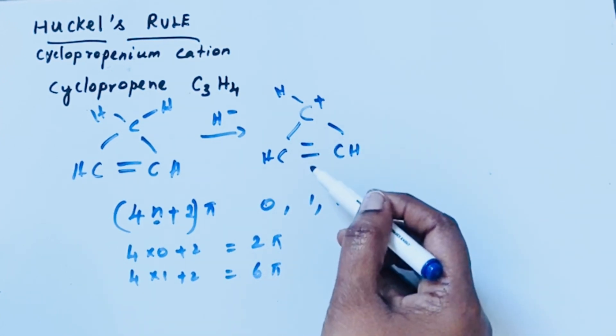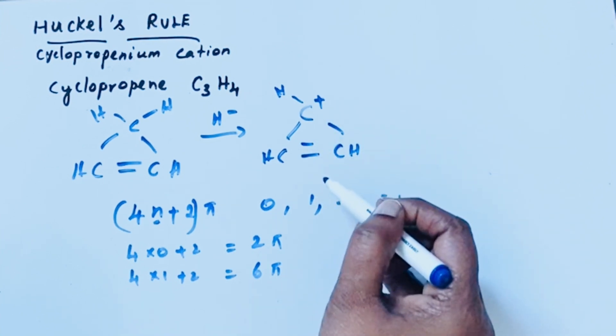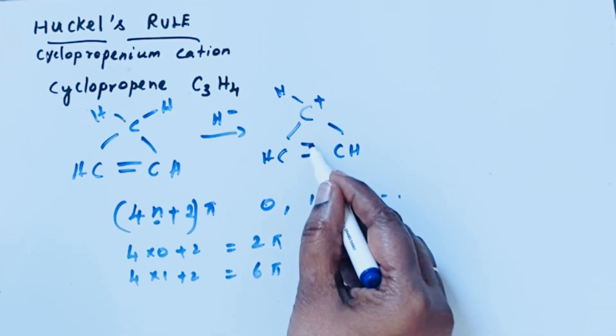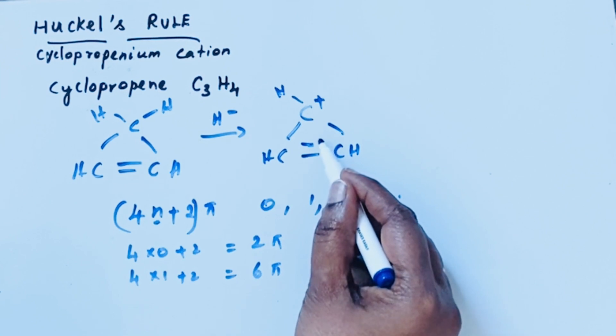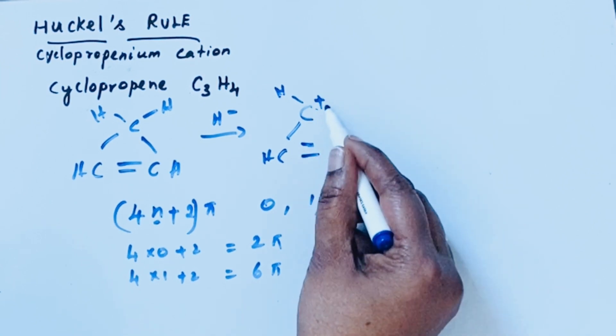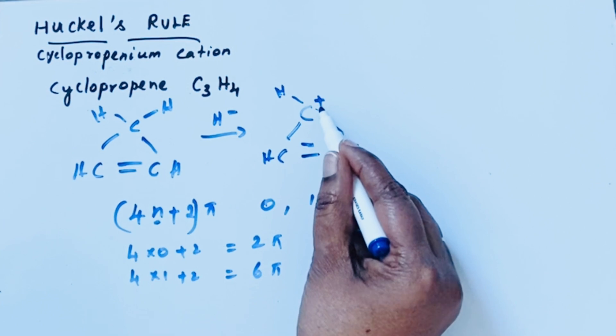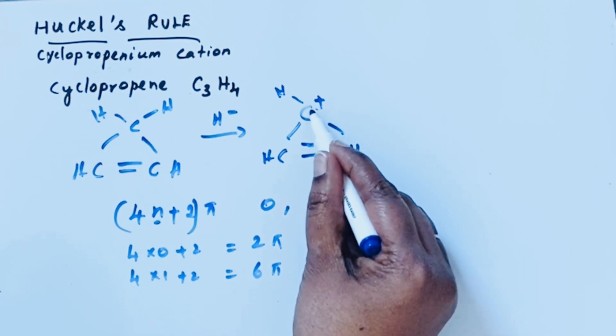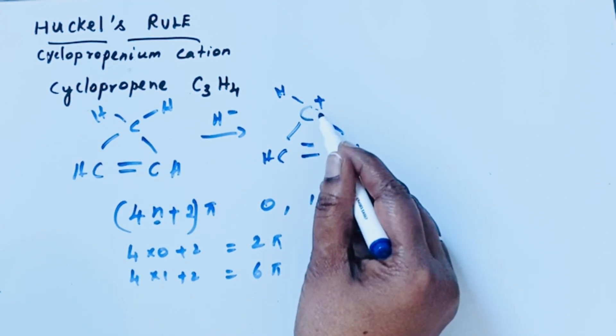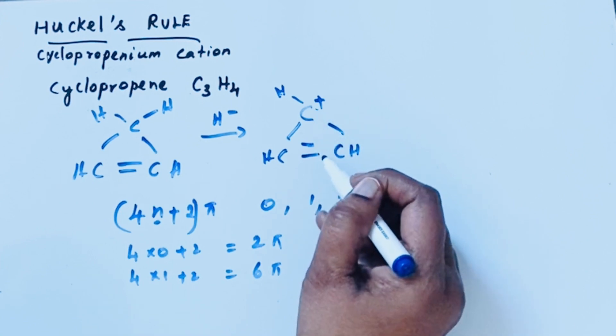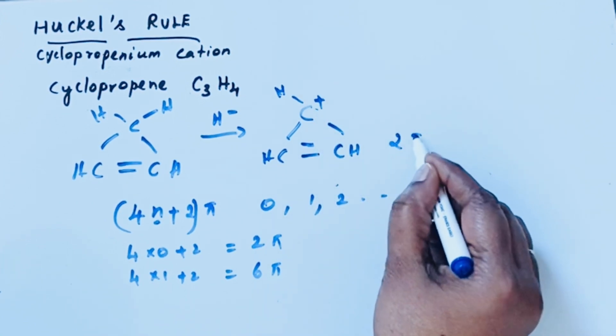Let us see now how many pi electrons are present in this. Here we have one double bond, which means 2 pi electrons are present. Then what about this plus charge? There is a shortage of electrons on this carbon, so there are no lone pi electrons. So this compound possesses only 2 pi electrons.